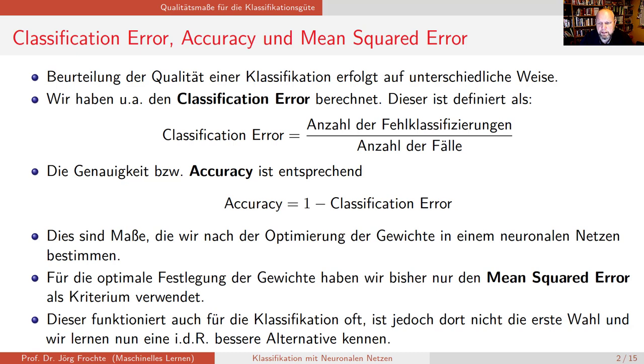Optimieren tun wir bis jetzt nach dem Mean Squared Error, also nach dem quadratischen Fehler. Und das ist eigentlich... das geht, aber das ist nicht die perfekte Wahl für eine Klassifikation. Und jetzt lernen wir ein neues Maß für den Fehler kennen, nachdem wir auch optimieren können.